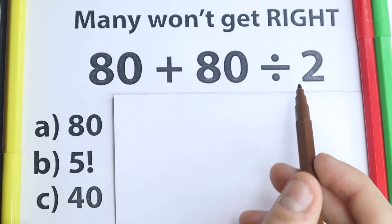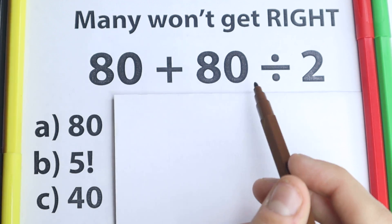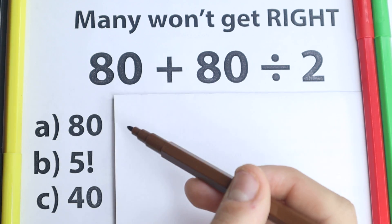We have 80 plus 80 divided by 2. On the first side this is a very simple question because everyone learned this stuff in the third grade, everyone knows about addition, everyone knows about division, but what about the correct answer?